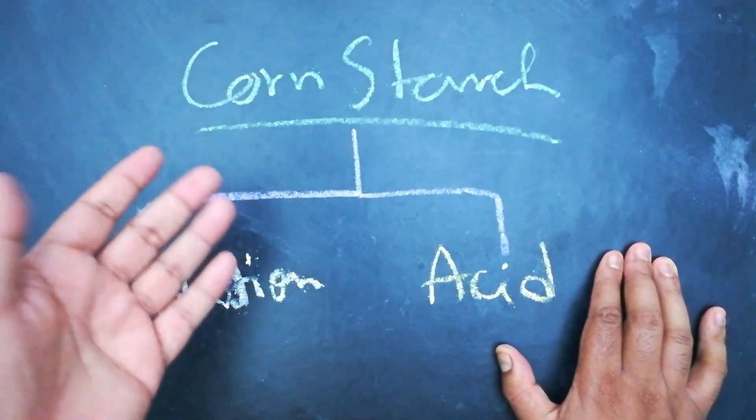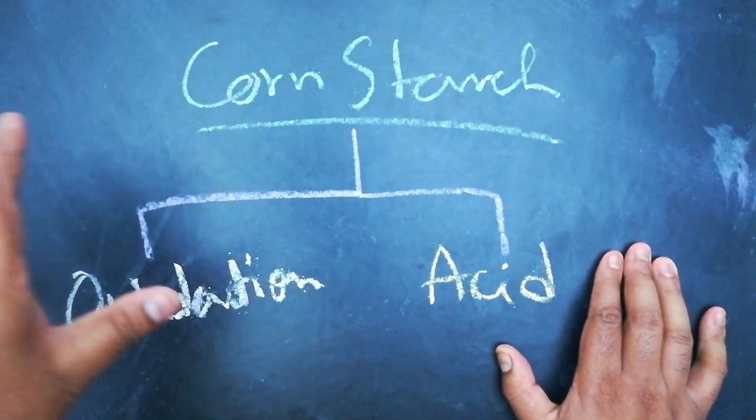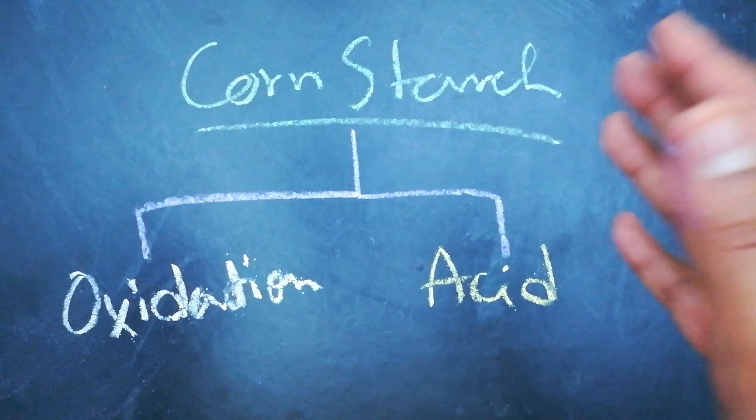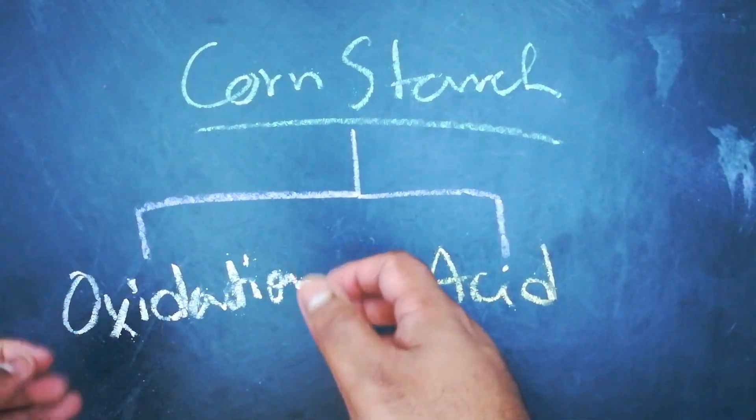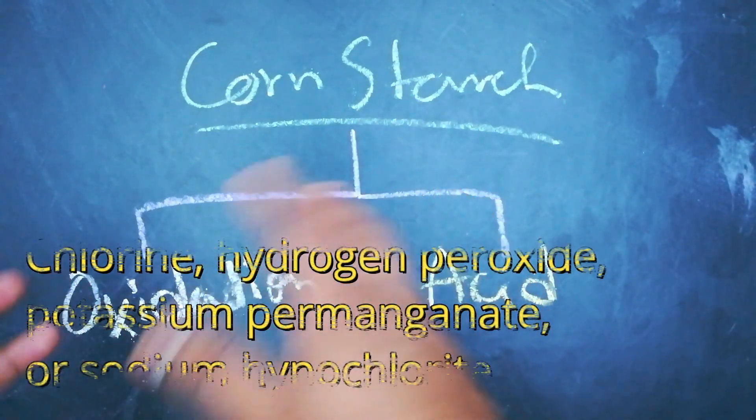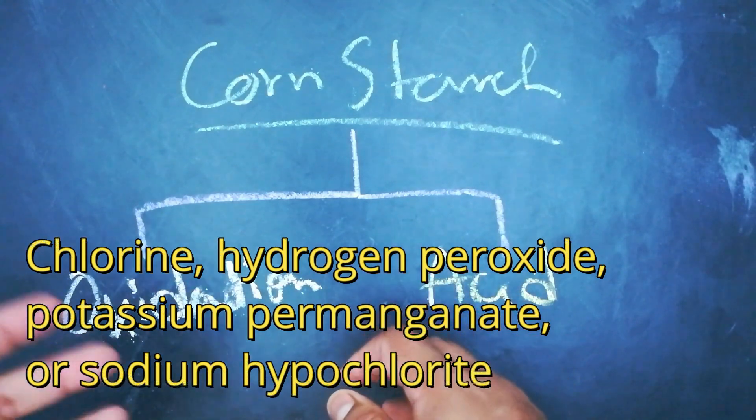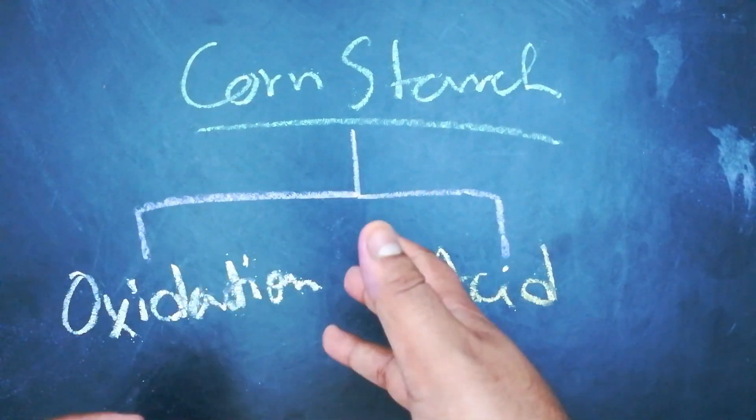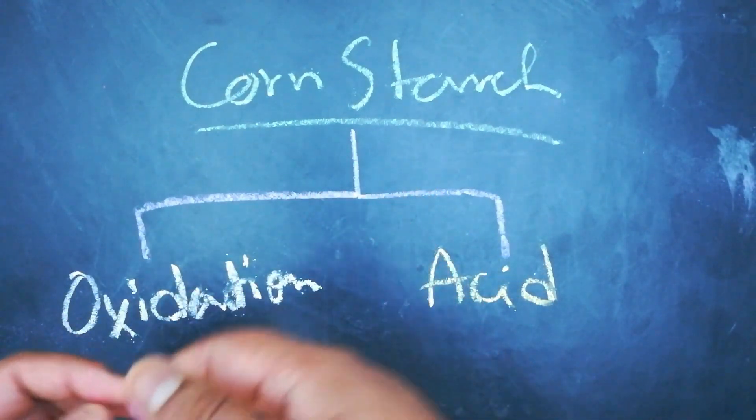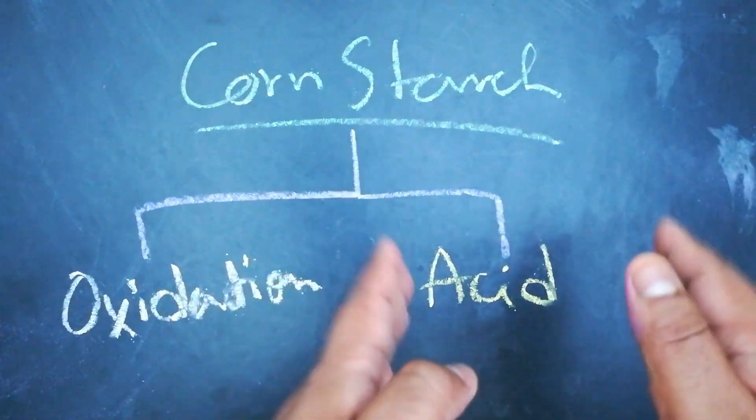When the oxidation mechanism is used, then the cornstarch is modified using oxidizing agents like potassium permanganate, hydrogen peroxide, chlorine, etc.